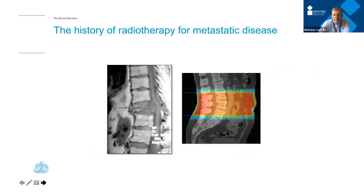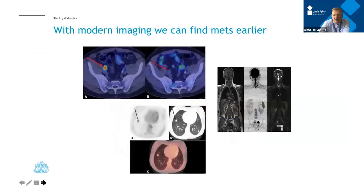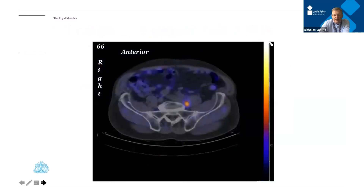Traditionally for metastatic spinal disease, we would treat with just a straight field of radiotherapy. But now with modern imaging — PET imaging and whole-body diffusion-weighted MRI — we can find metastases much earlier. Scans that previously couldn't pick up disease with conventional imaging we can now see, giving us the ability to target these metastases far more precisely.